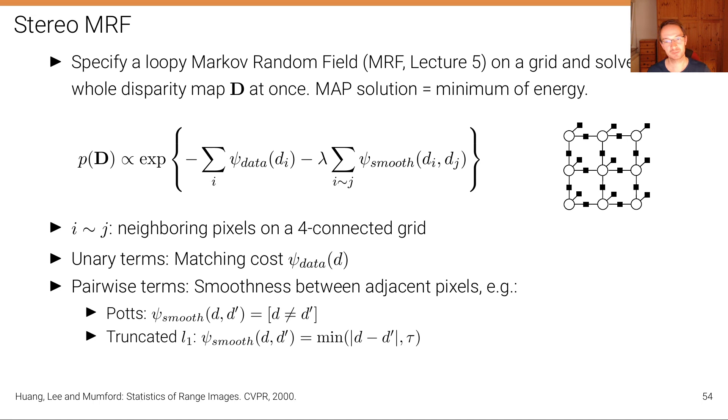In summary, we have this neighborhood relationship, which is denoted here by this tilde, where i and j are two neighboring pixels on this four-connected grid. Then we have unary potentials, which are the matching costs. And then we have this additional pairwise potentials now, which model our prior belief about the smoothness of adjacent pixels. So a very simple model for the smoothness term would be one that says if I look at two neighboring sites, then I want to have a small energy value if the elements are the same.